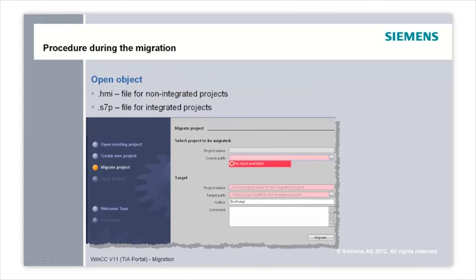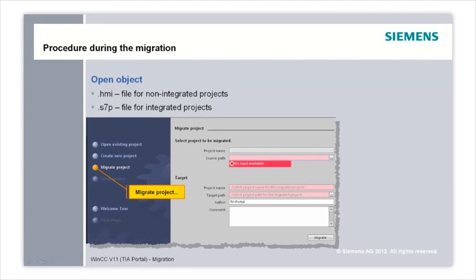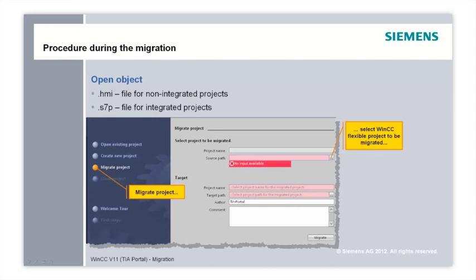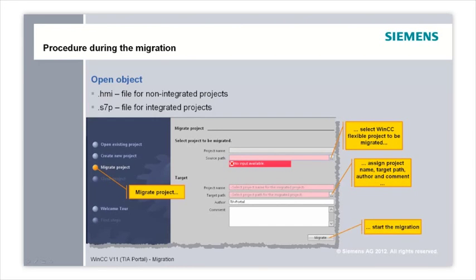How to realize a migration: you can migrate WinCC flexible standalone projects to WinCC version 11 as well as WinCC flexible projects integrated in Step 7. In the WinCC version 11 portal, you choose the action 'Migrate project', then you specify the source path of the Step 7 or WinCC flexible project as well as the target path for the migrated project. Press the Migrate button to migrate the project to WinCC version 11.